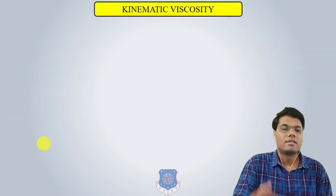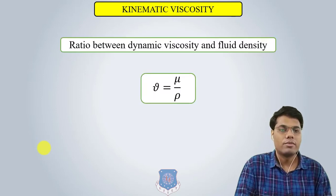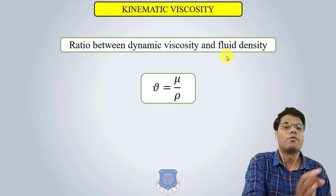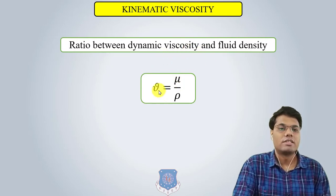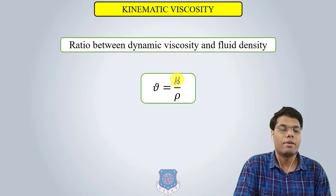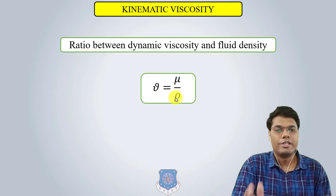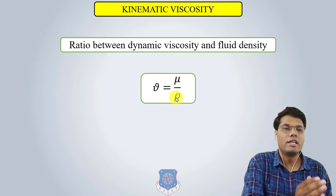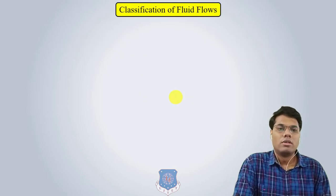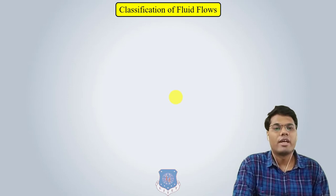Kinematic viscosity is the ratio of dynamic viscosity to fluid density. It is generally denoted by nu, where nu = mu/rho — that is, dynamic viscosity divided by fluid density.